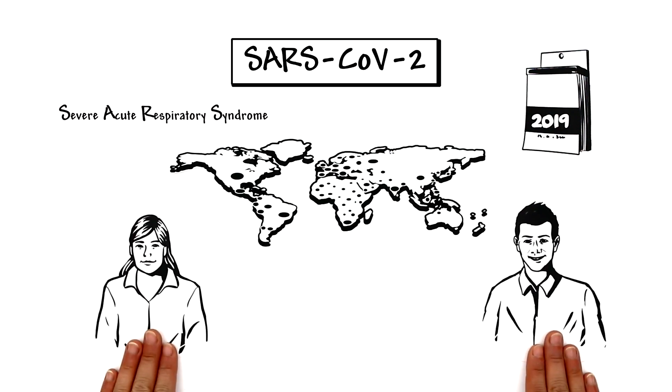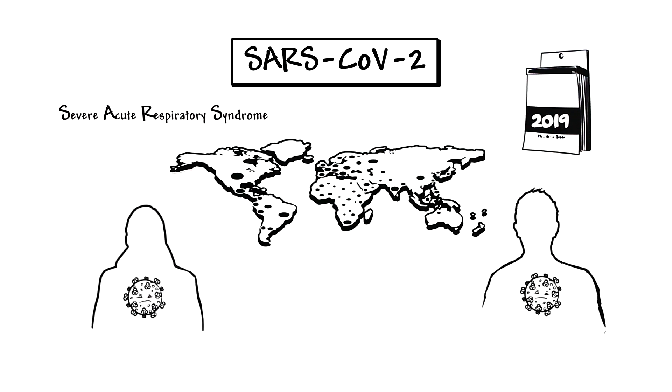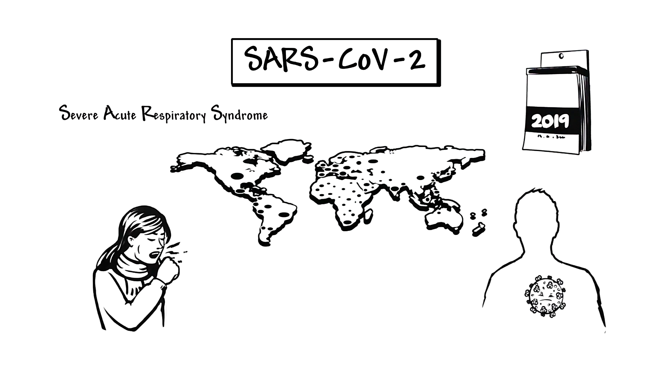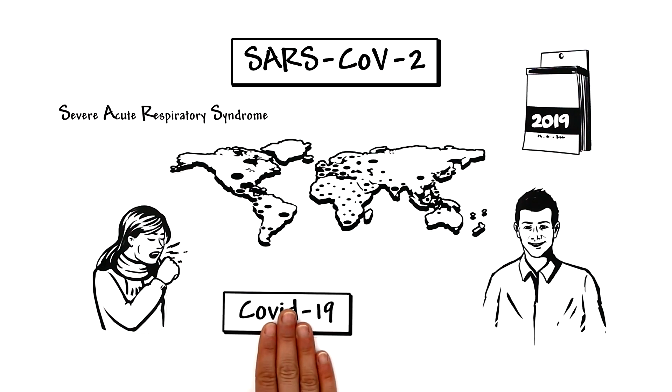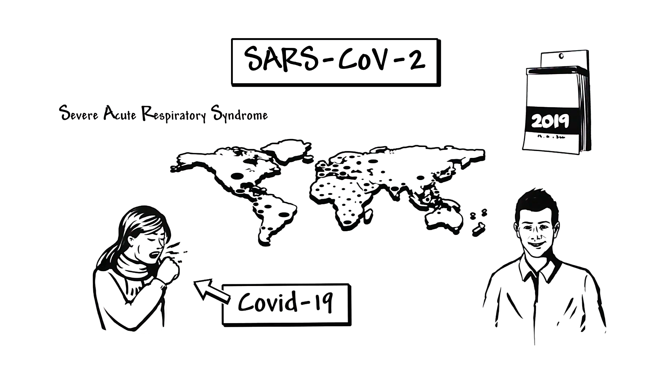But the virus is just a pathogen. It can make people ill, but not inevitably. COVID-19 is the illness caused by the pathogen.